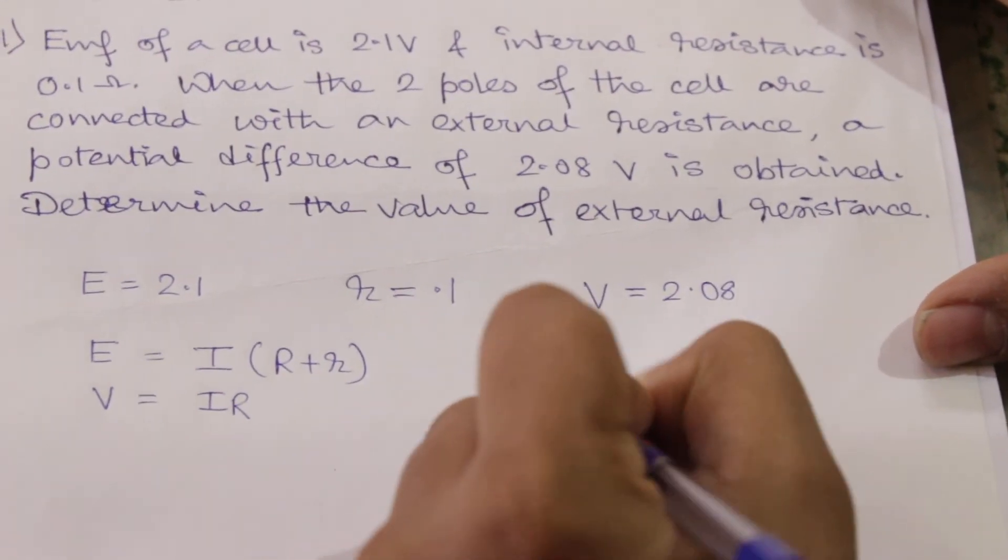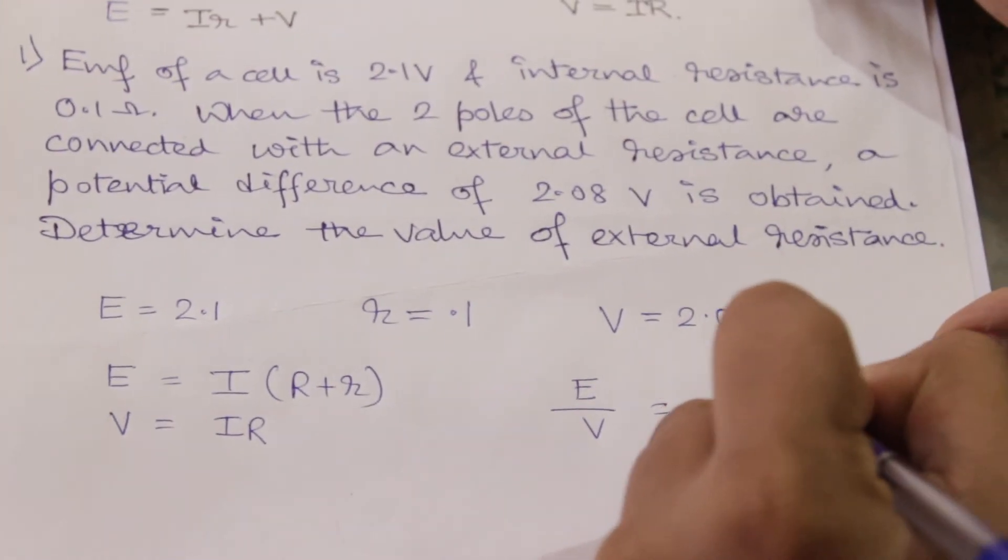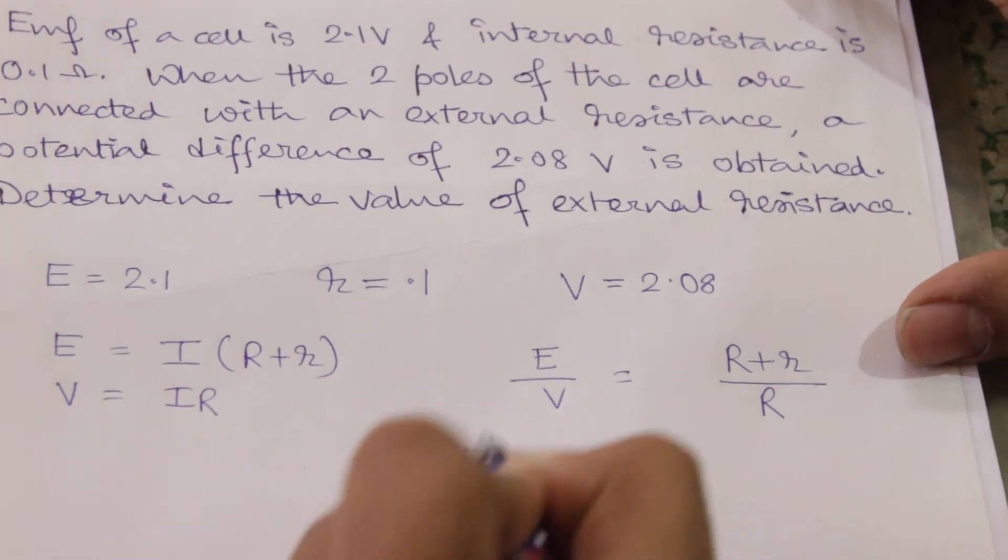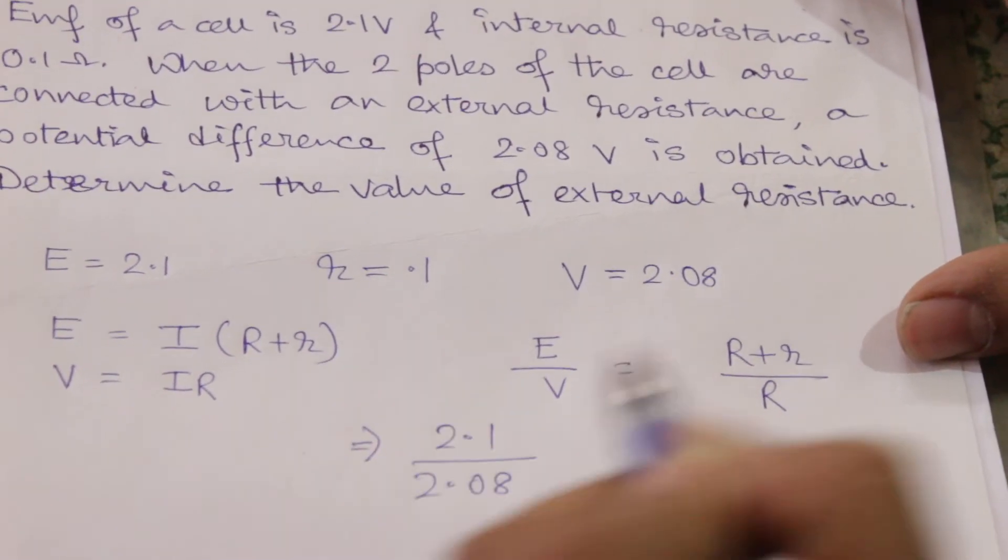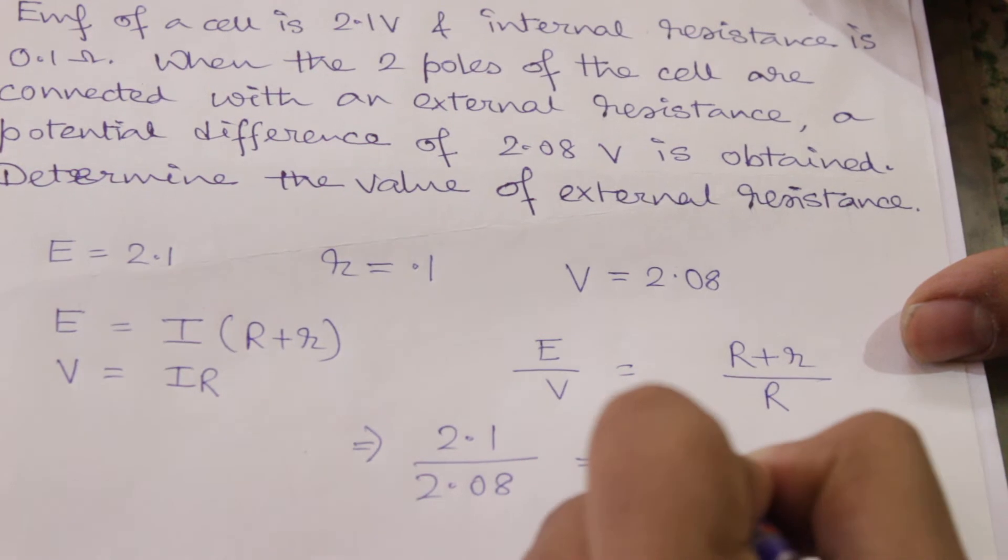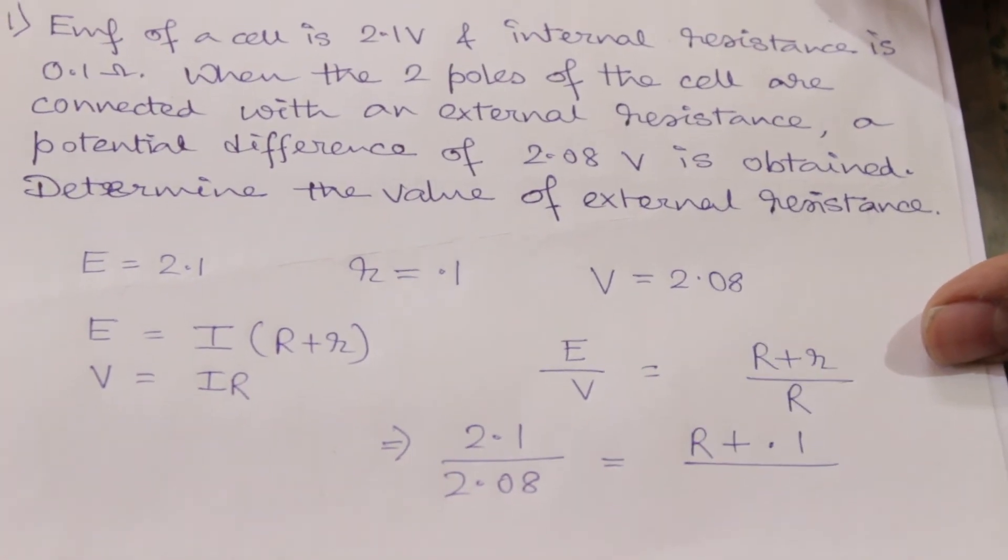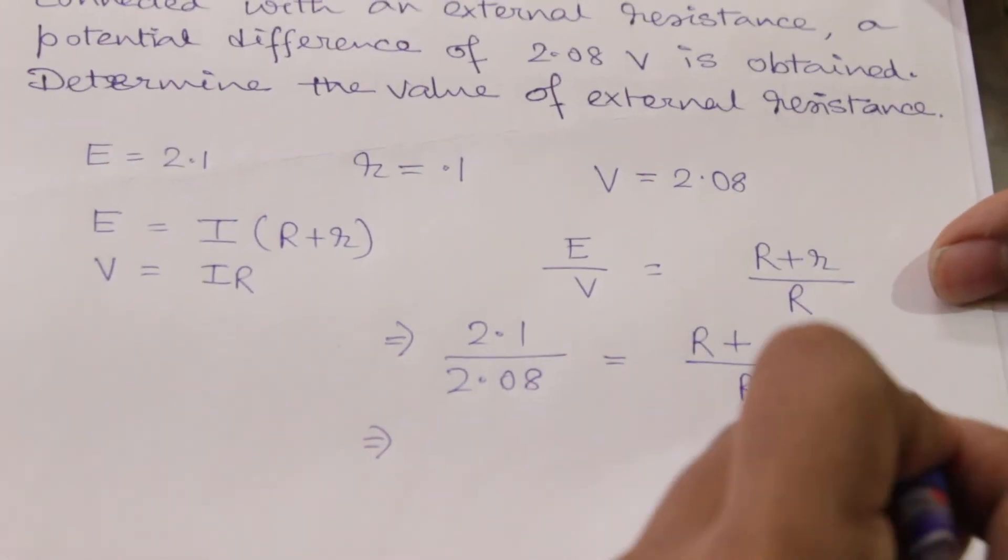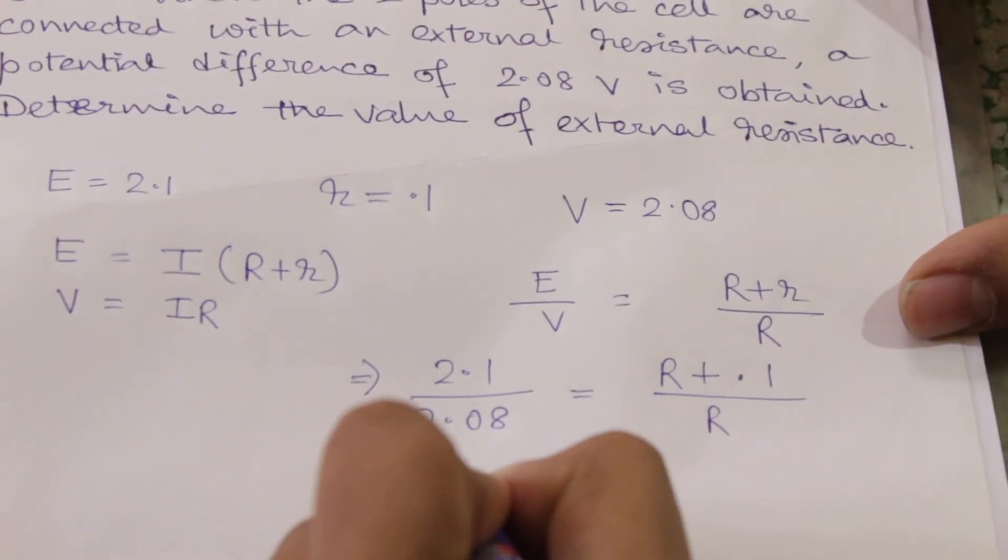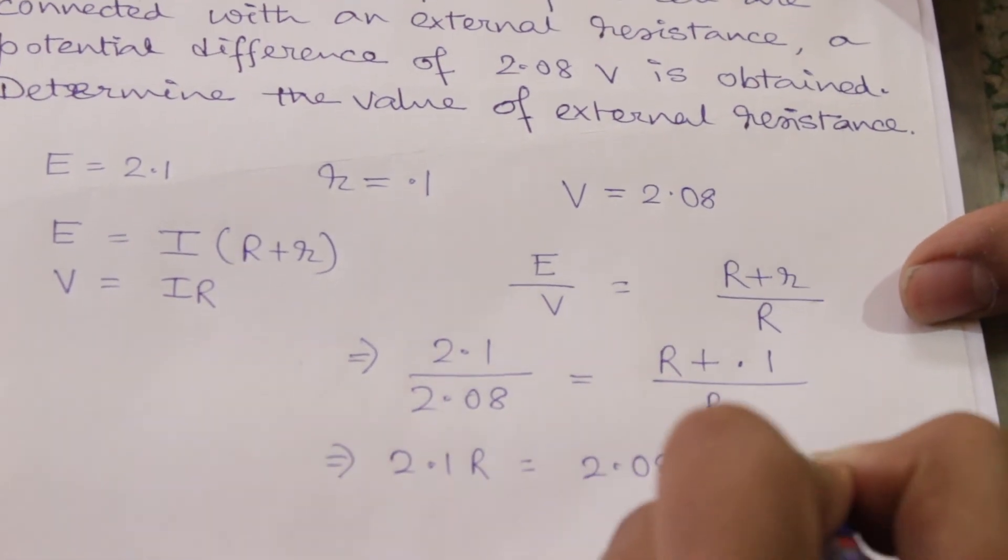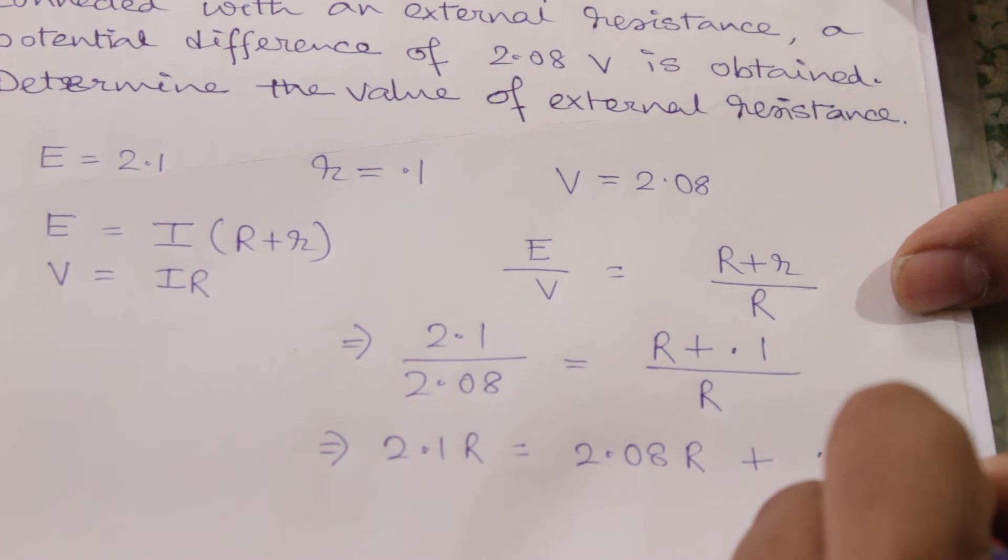Now E equal to I into R plus r, which is equal to IR plus Ir. So E by V will be equal to R plus r by capital R, which is equal to 2.1 by 2.08. So R plus 0.1 divided by R.